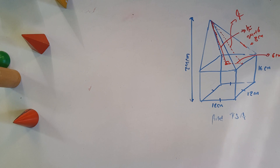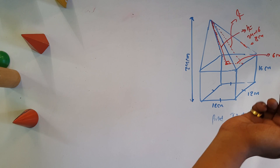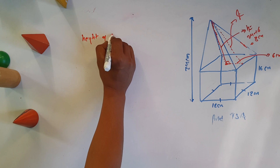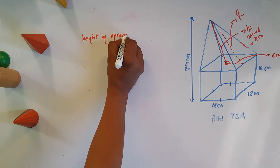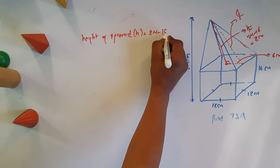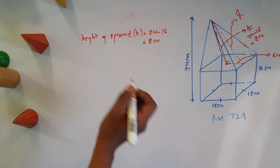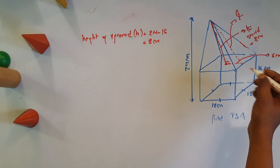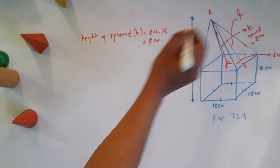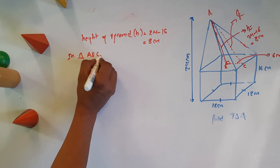We have to take a look at the diagram of the height of the pyramid. The height of the pyramid is h equals 24 minus 16. Now we look at the triangle, which has vertices a, b, and c — triangle abc.